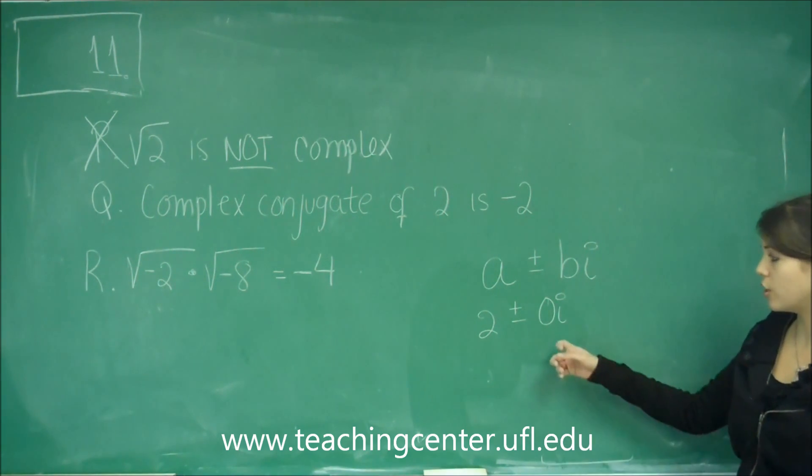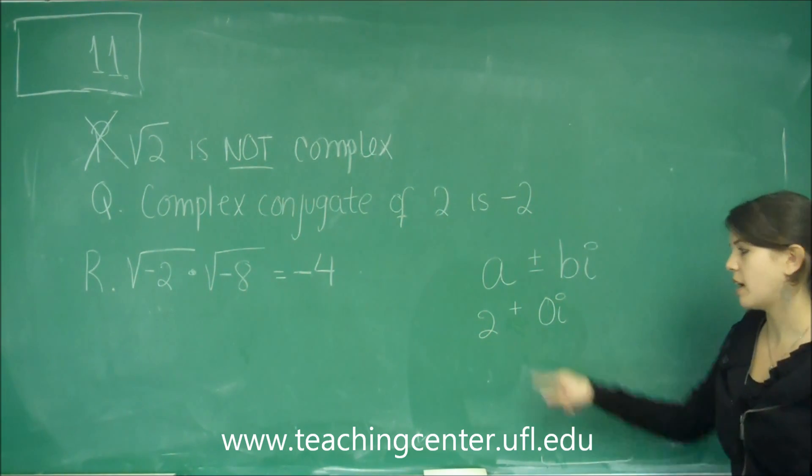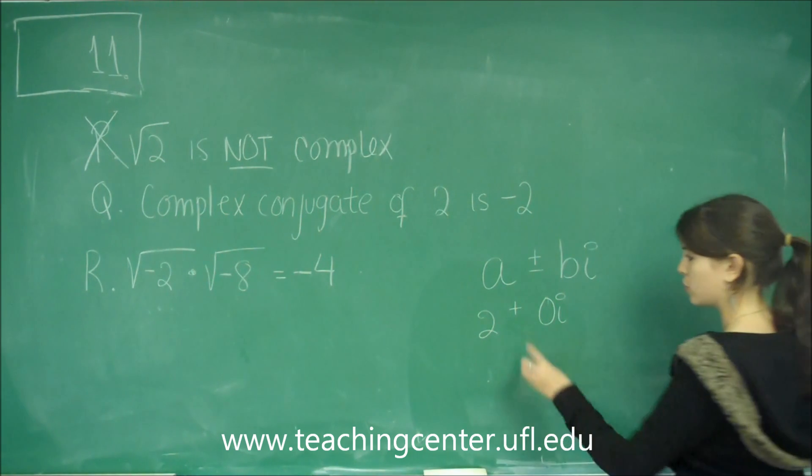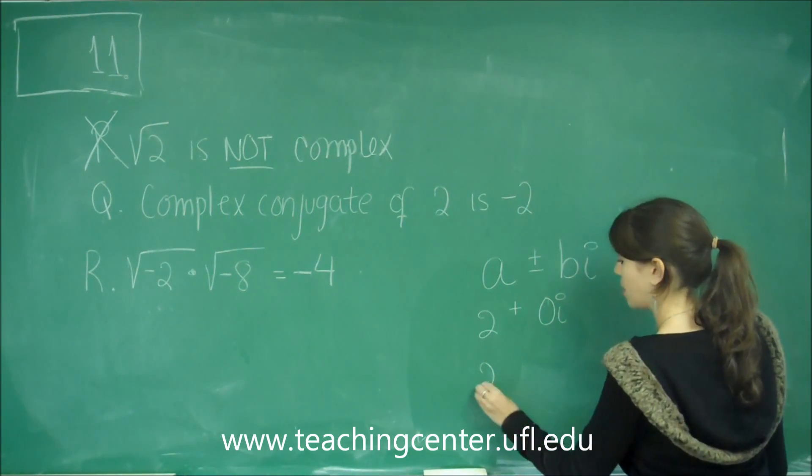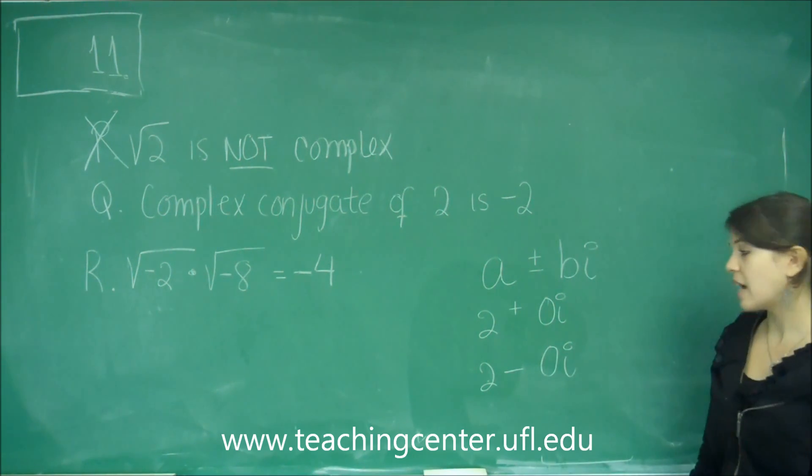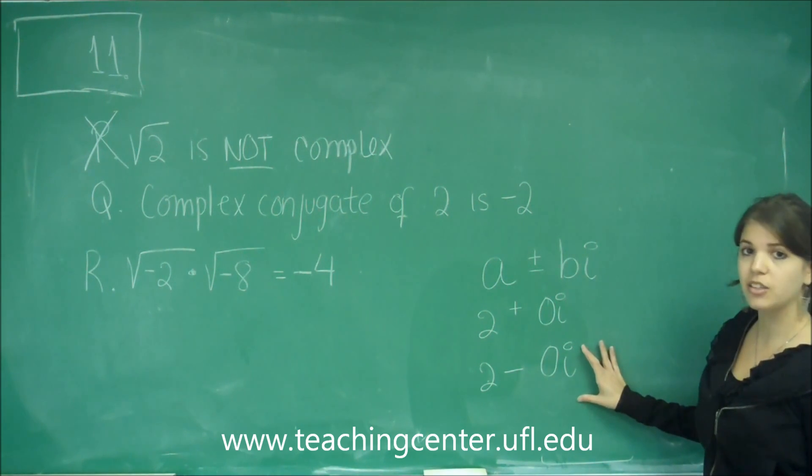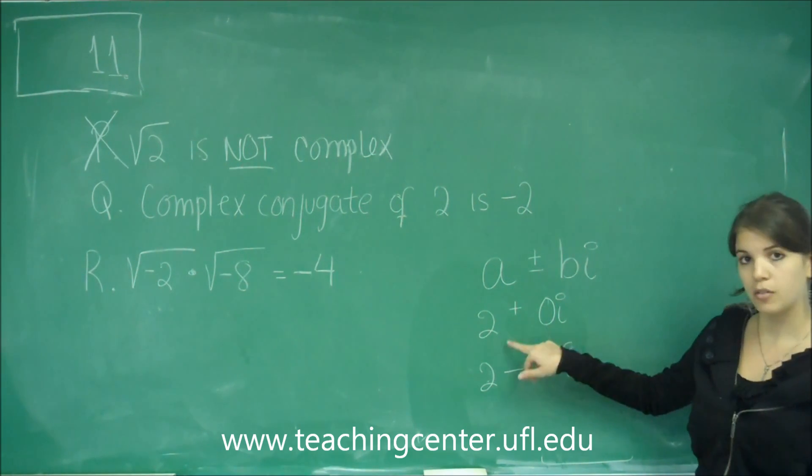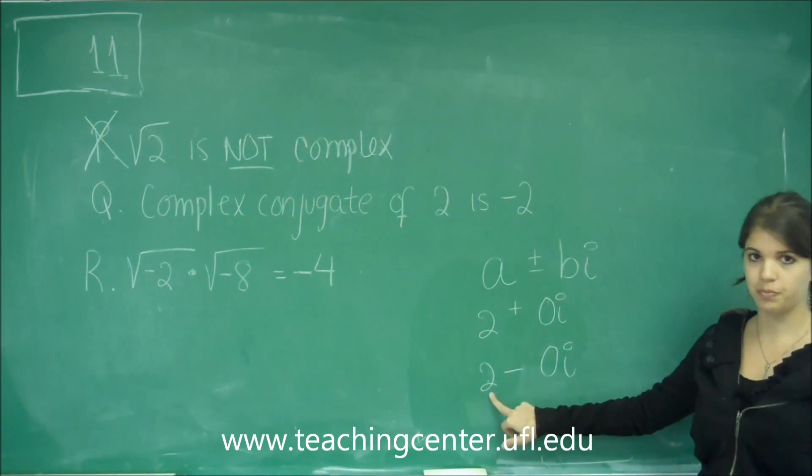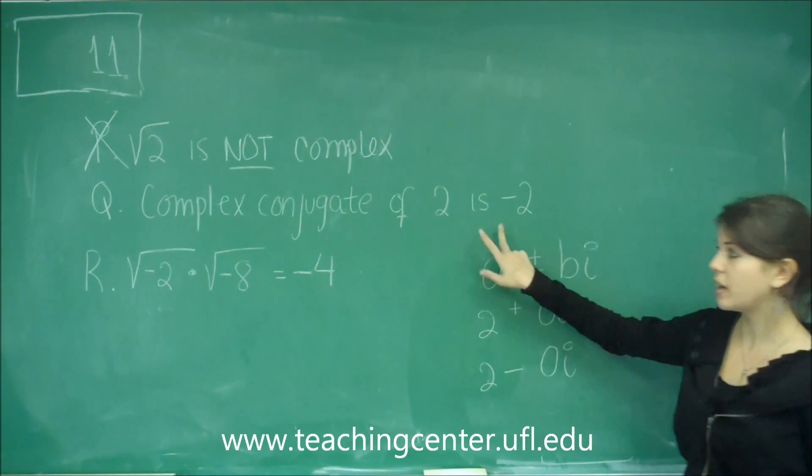The complex conjugate is when you change the sign of this. Let's say for the sake of this problem, we have a positive. So, if we change the sign to get the complex conjugate, we would get 2 minus 0, I. The sign that changes is the part that has the I in it. So, actually, the complex conjugate of 2 is also 2. The complex conjugate of 2 is not negative 2. So, that is not correct.